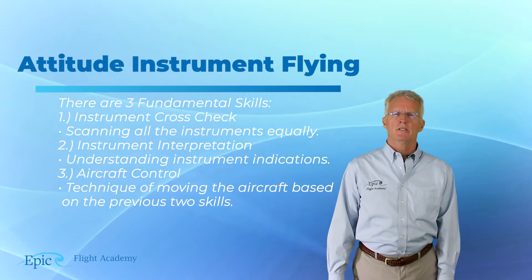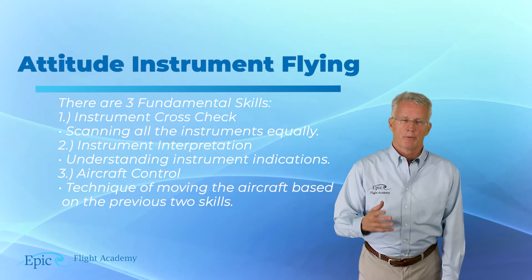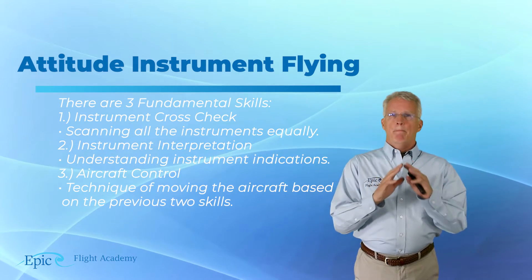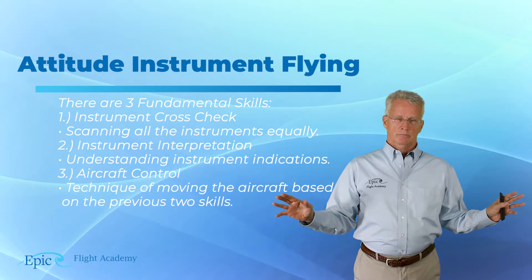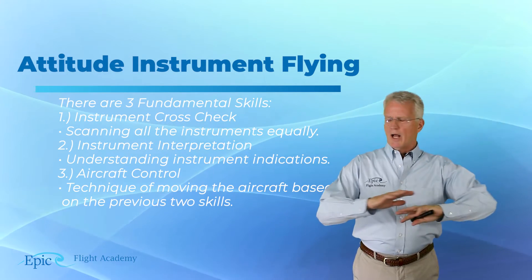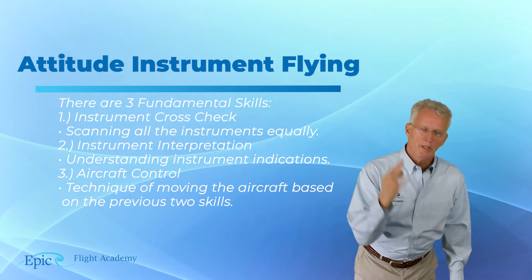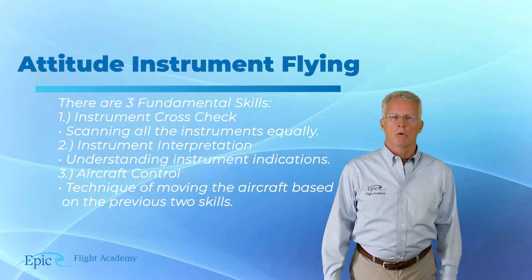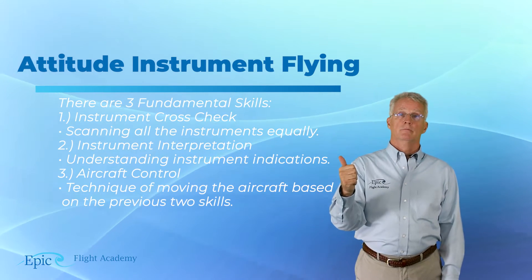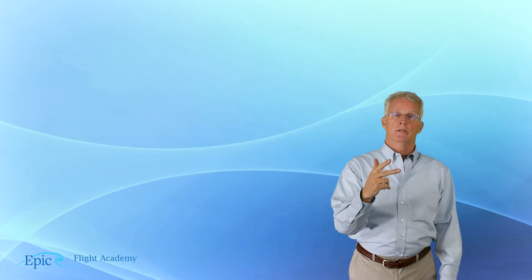Let's dig into instrument cross-check in a little more depth. Think back to basic straight and level — VFR or IFR, either way, just basic straight and level. There are three primary things a pilot is always concerned about: altitude, heading, and airspeed.